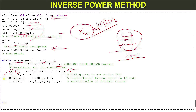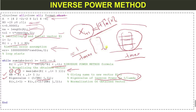The eigenvalue is calculated as 1 divided by the absolute maximum value — since the eigenvalue of the inverse matrix is 1/lambda, where lambda is the maximum value. We then divide the new vector x(i+1) by the absolute maximum value to complete the normalization step.